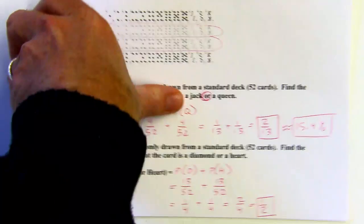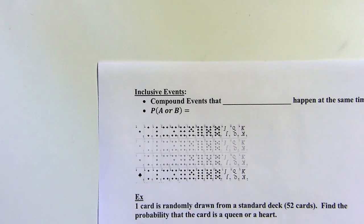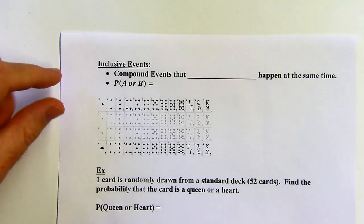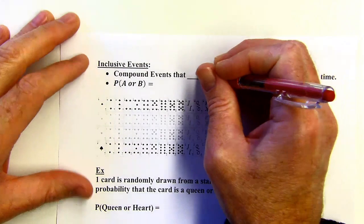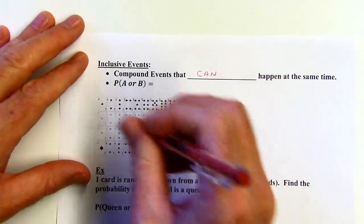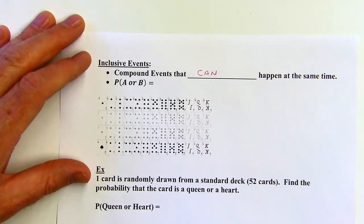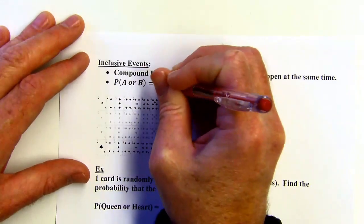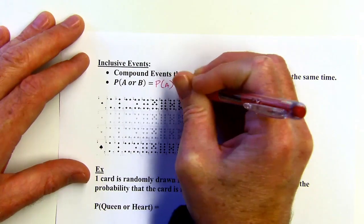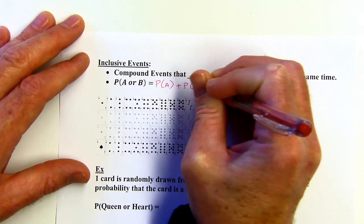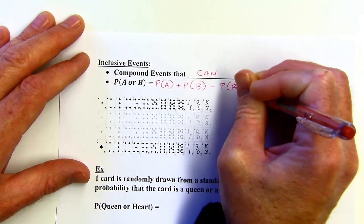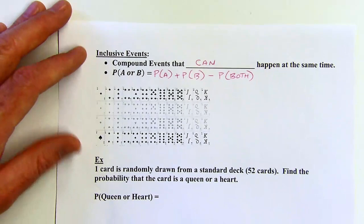That's mutually exclusive events — when two events cannot happen at the same time. Now, inclusive events are compound events that can happen at the same time. The formula is: probability of the first event plus probability of the second event, minus the probability that both happen at the same time.